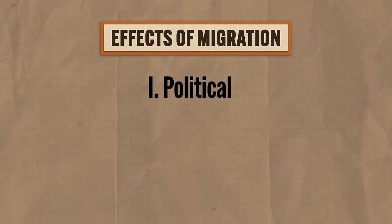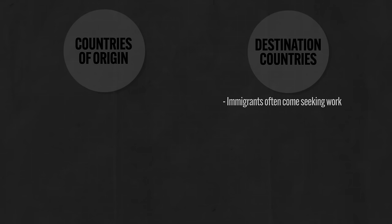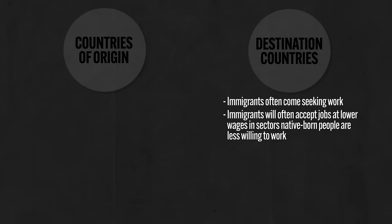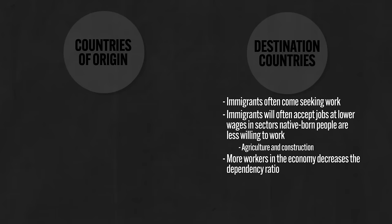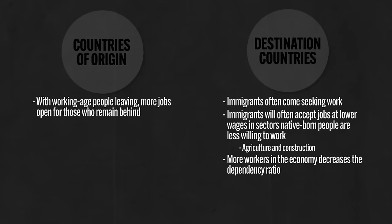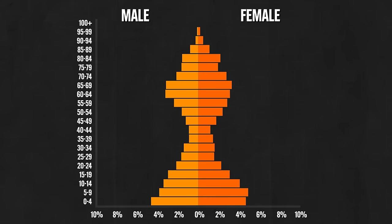Second, migration can have significant economic effects, felt both in destination countries and in countries of origin. Destination countries benefit because immigrants often come seeking work and will accept jobs in sectors where native-born people are less willing to work — today agriculture and construction. This can be extremely helpful to countries with aging populations because more workers decreases the dependency ratio. In countries of origin, with working-age people leaving, more jobs are open for those who remain. Additionally, immigrants often send money back home — these remittances are no small matter. According to the World Bank, in 2022 over 630 billion dollars in remittances circulated between immigrants and their families. On the negative side, if too many working-age people leave, there aren't enough to fill jobs back home, creating slow economic growth.